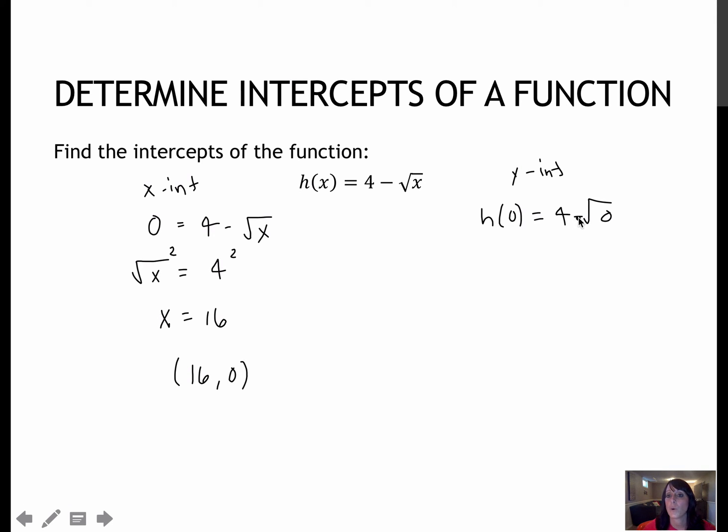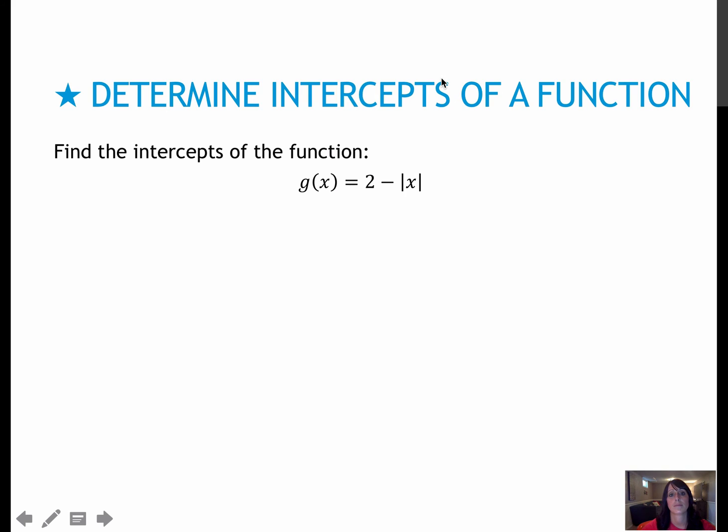I would take 4 minus the square root of 0. The square root of 0 is 0. And 4 minus 0 is 4. So my y-intercept is 0 comma 4. One for you to try on your own, so press pause. Try the question, then press play to check your work.